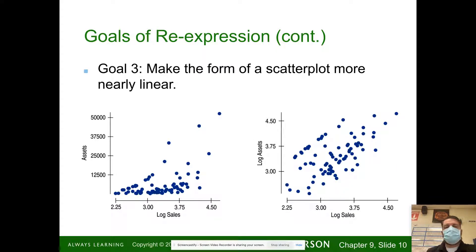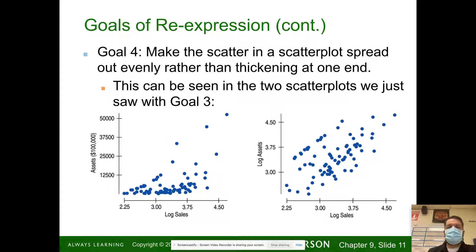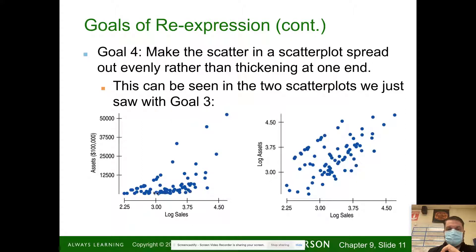Goal three: make the form of a scatterplot more nearly linear. Here you have assets and the log of sales — that was already a mess. But when you take the log of the assets versus the log of the sales, now you've got a fairly linear-looking shape. Another goal would be to make the scatter in the scatterplot spread out evenly rather than thickening at one end.